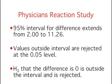In the Physician's Reactions case study, the 95% confidence interval for the difference between means extends from 2.00 to 11.26. Therefore, any value lower than 2.00 or higher than 11.26 is rejected as a plausible value for the population difference between means.